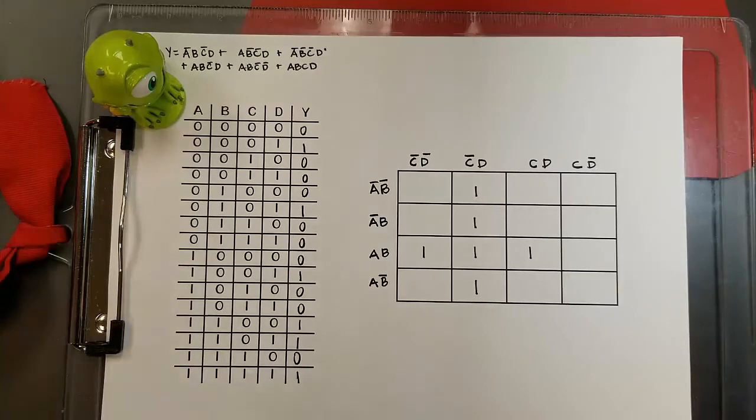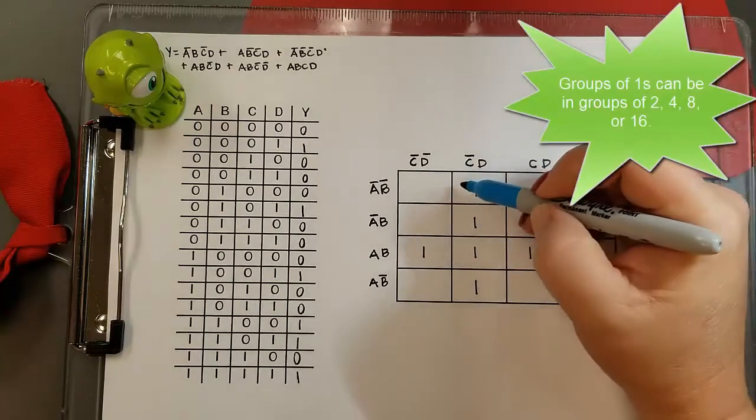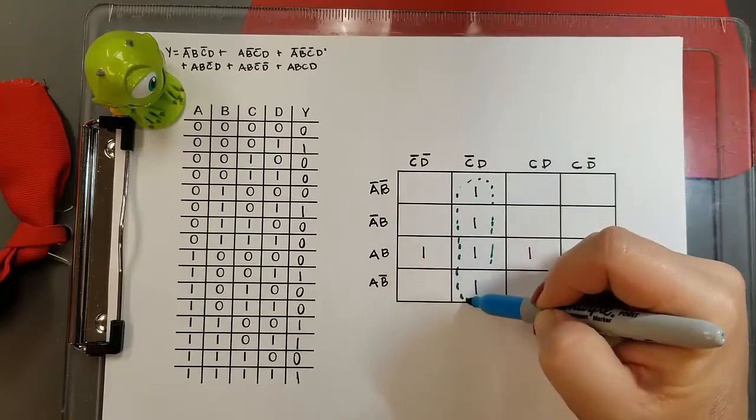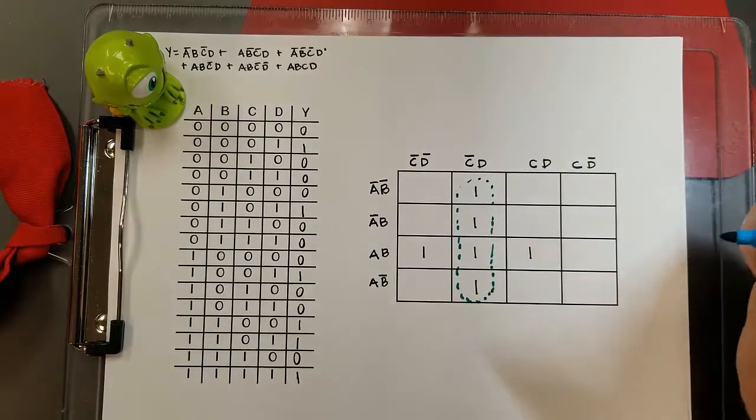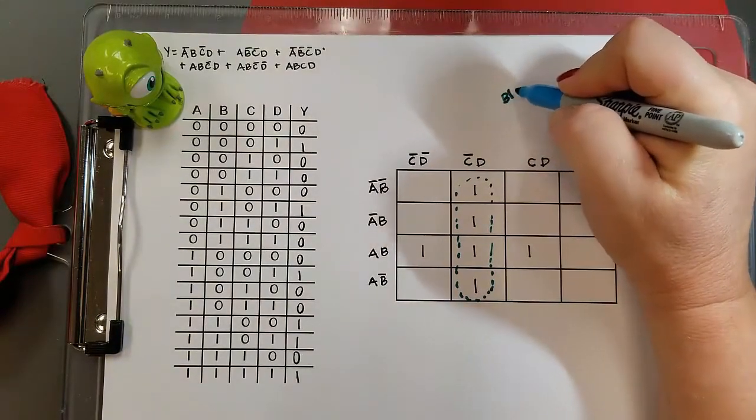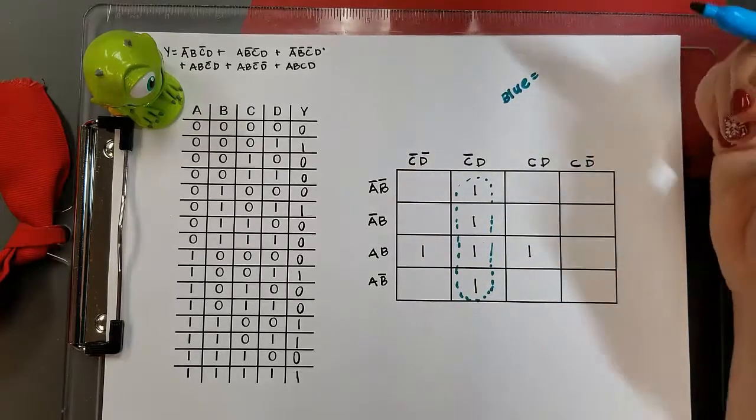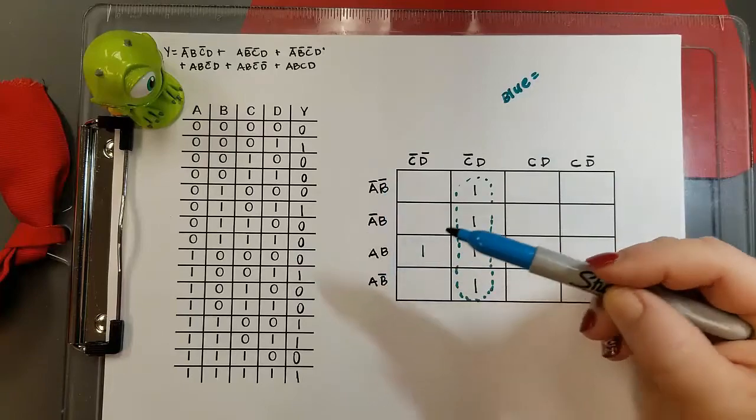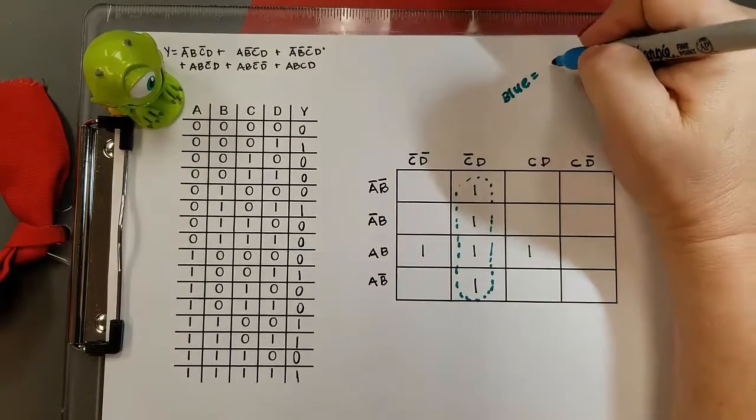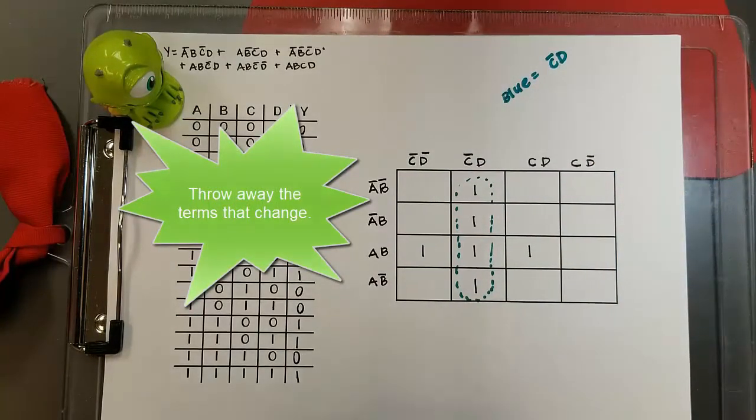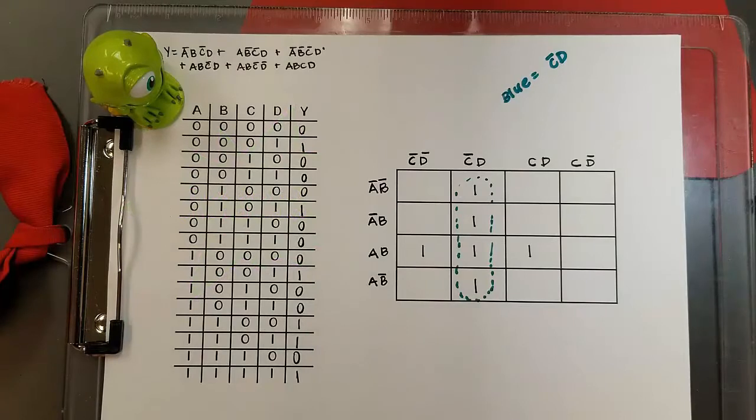Now we're going to create groupings in our k-map, and so we're looking for ones in groups of twos or in pairs. There with the blue pen I'm circling the largest group of ones I can find, which is a group of four. Now I want to look at what that term will be. If I look as I moved down, A changed and B changed, so that means those terms aren't important and we're going to get rid of them. So that means the term I get from that group of four is not C D.